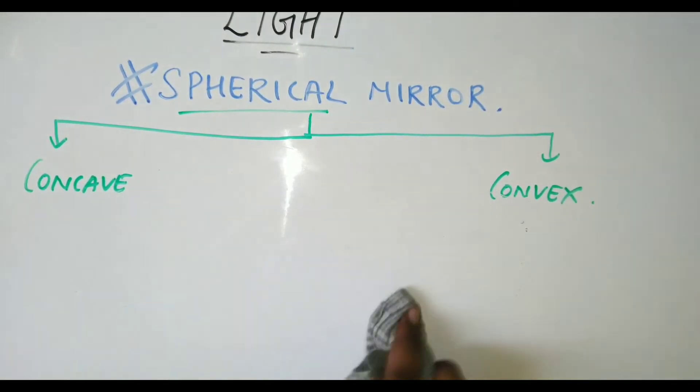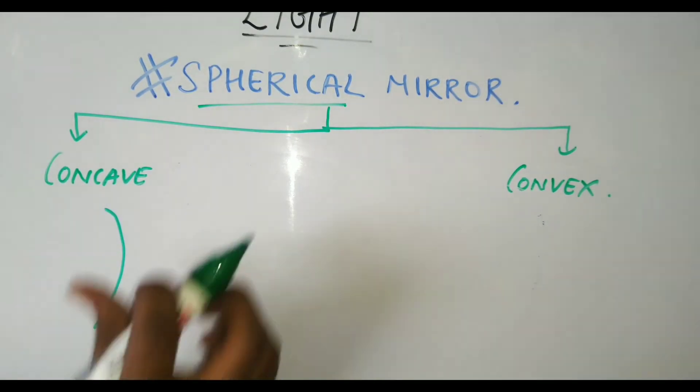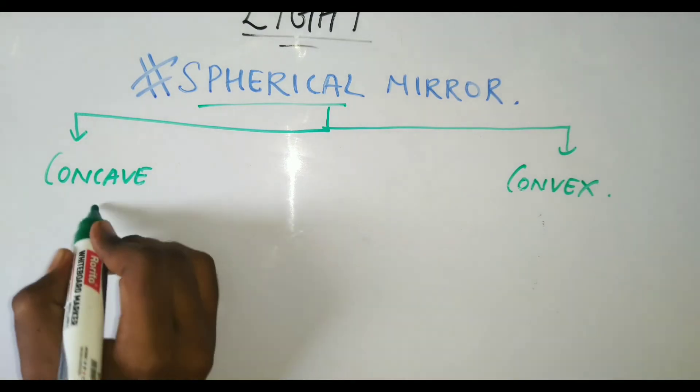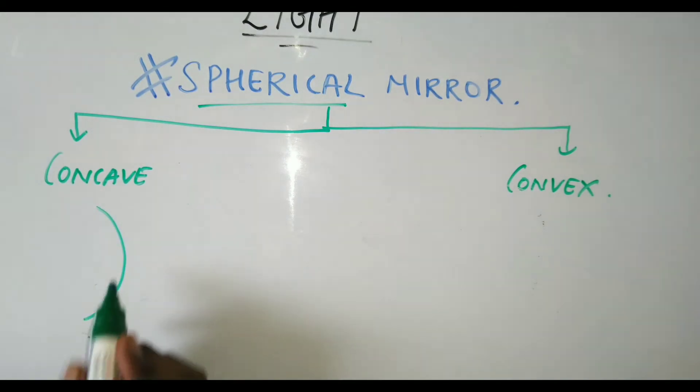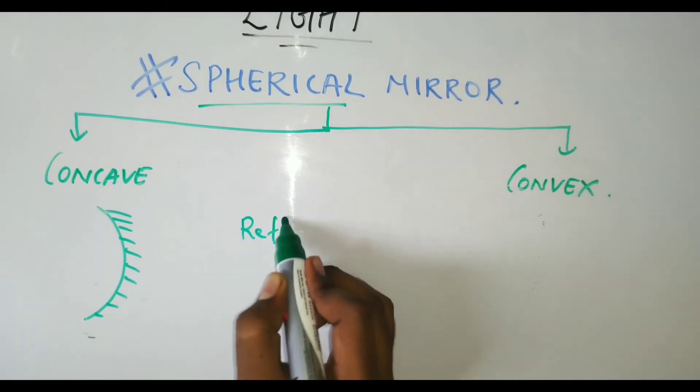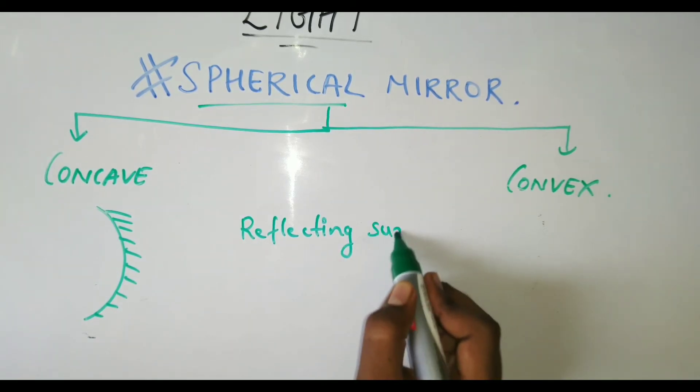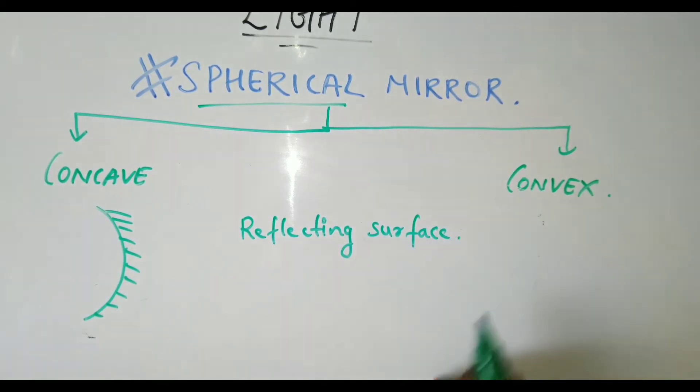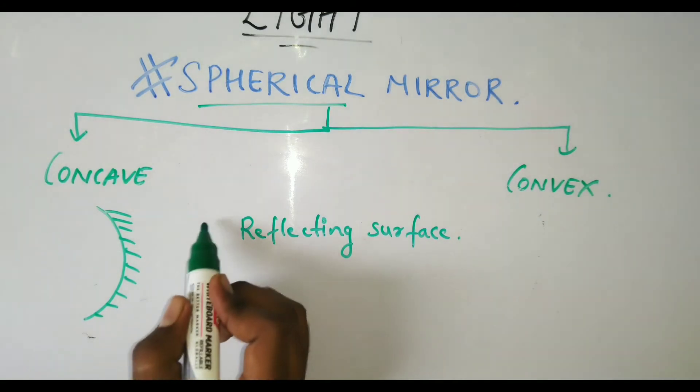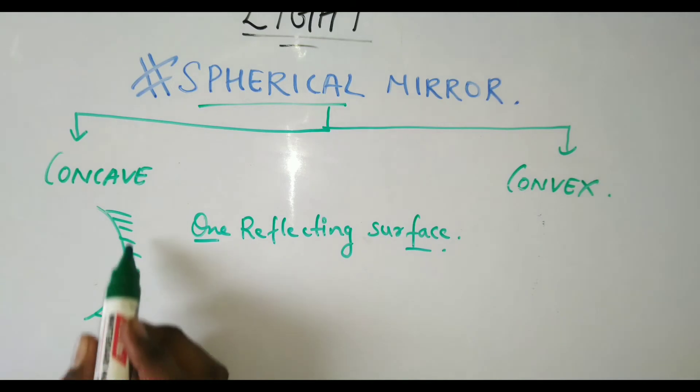We'll understand this with a diagram. Concave will be one code - this mirror is also called a code mirror because it has a code shape. If I paint the outside, this also contains only one reflecting surface. Plane mirror also has one reflecting surface - that you need to remember. Only one reflecting surface, that means the other surface is painted.